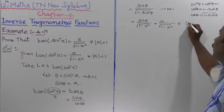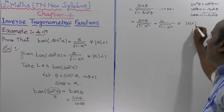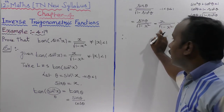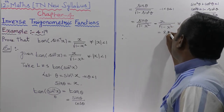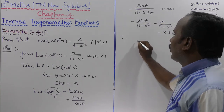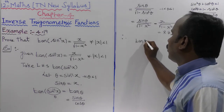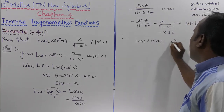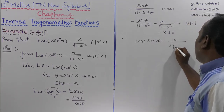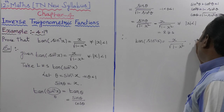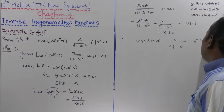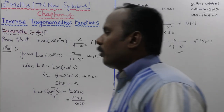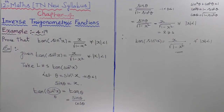For all modulus of x less than 1. Therefore, tan of sin inverse of x is equal to x divided by root of 1 minus x squared, for all modulus of x less than 1. Hence proved — Example 4.19.